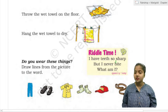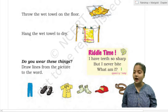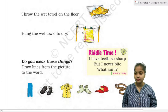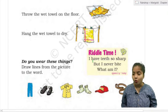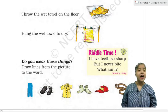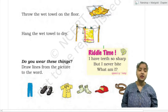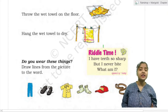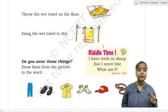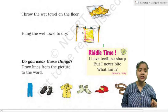Riddle time! I have teeth so sharp but I never bite. What am I? Tell me, students, what is it? I have teeth so sharp but I never bite. It's a comb. A comb has sharp teeth but it never bites. No, it's the job of fixing our hair.